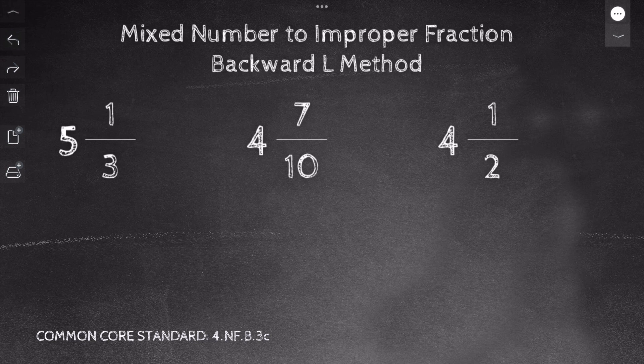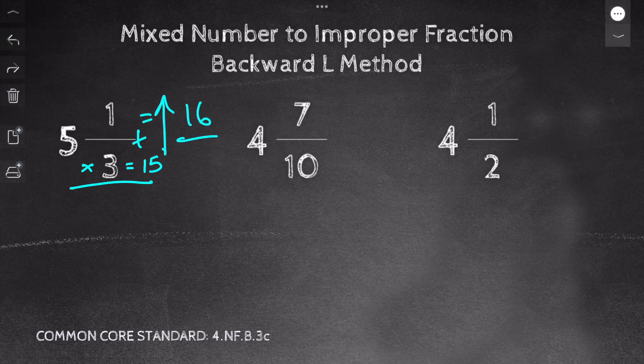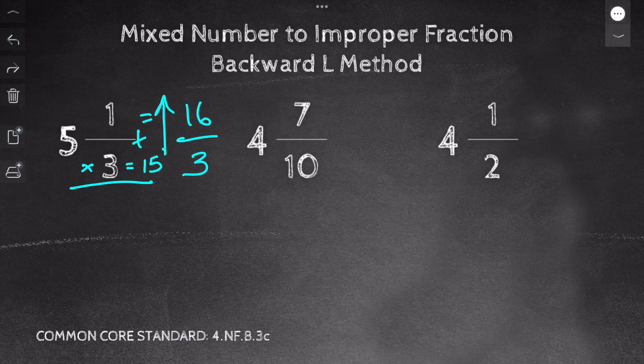So for our first problem, we have 5 and 1/3. My backward L method: I do 5 times 3 equals 15. Move up. 15 plus 1 equals 16. I have 16/3.